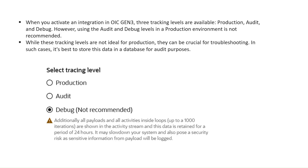In OIC Gen3, when you activate an integration it allows three levels of tracing: production, audit, and debug. If you enable audit or debug mode, some information about the payload is stored in the system. That is not recommended in the production environment because your payload data may have sensitive information being sent from source to target systems.